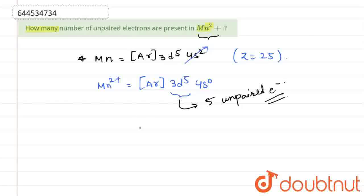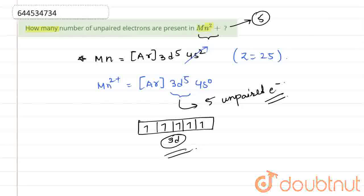In case of Mn, if we draw for 3d5, for the 3d orbital, the five electrons are present like this in the 3d orbital. So the correct answer for this question is five. Thank you.